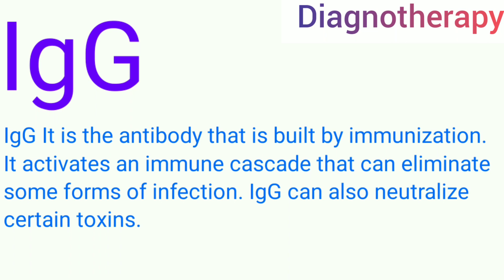IgG is an antibody that is built by immunization. It activates an immune cascade that eliminates some forms of infections. IgG can also neutralize certain toxins.